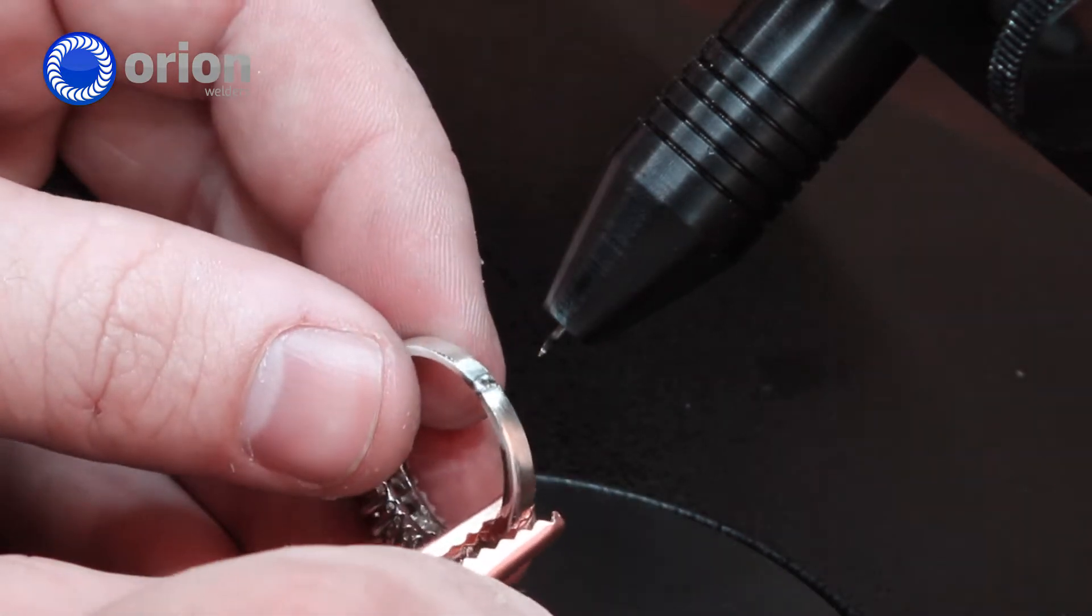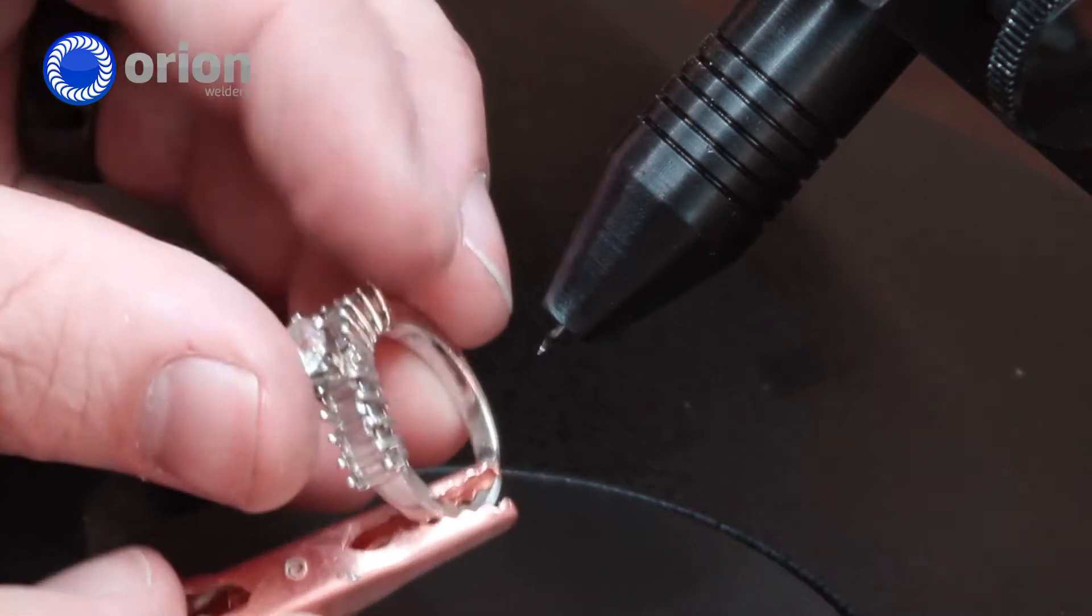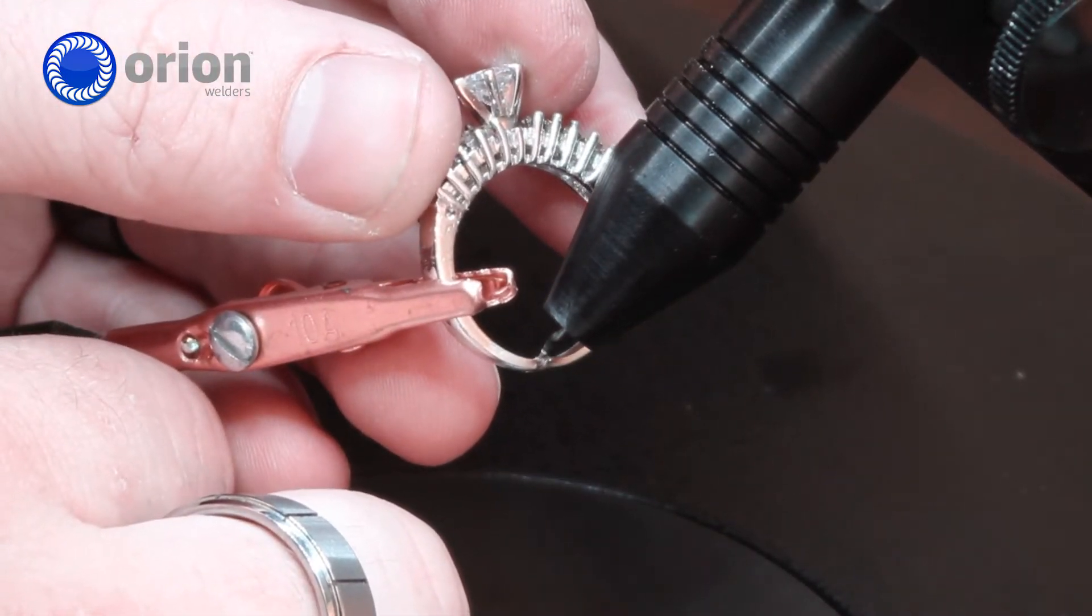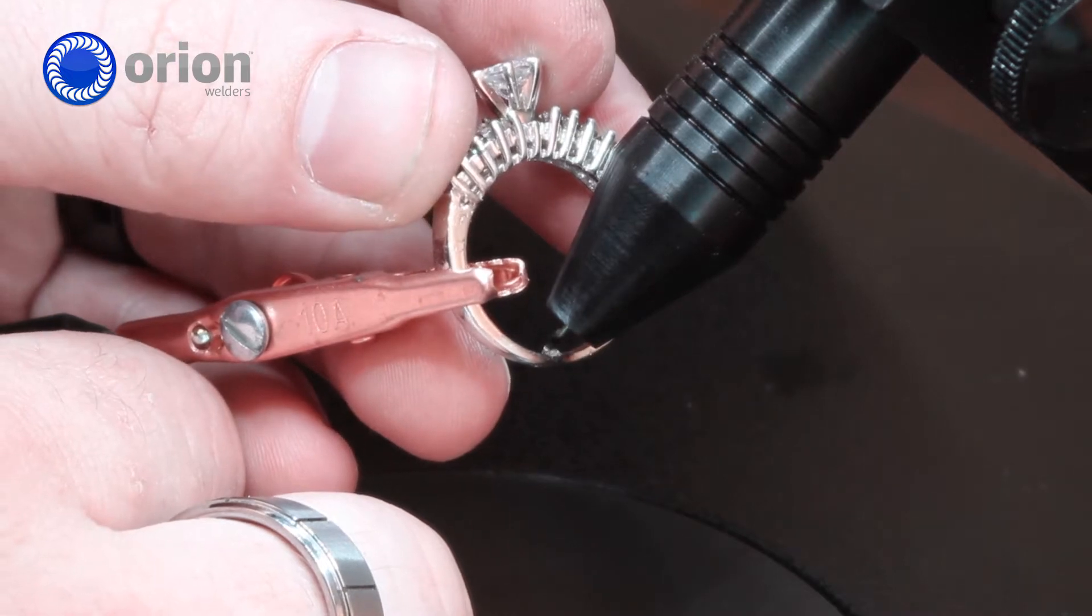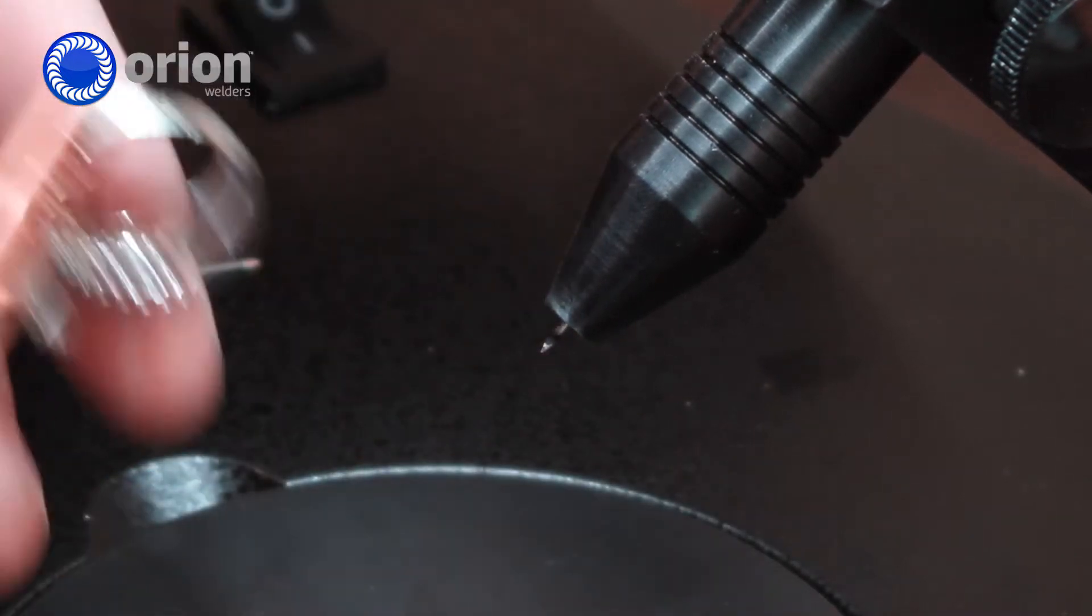That's just to temporarily tack it. Now what I like to do is go to the inside of the ring. And I don't know if you'll be able to see this. Go to the inside of the ring and simply do a few welds to bond the inside of the ring.